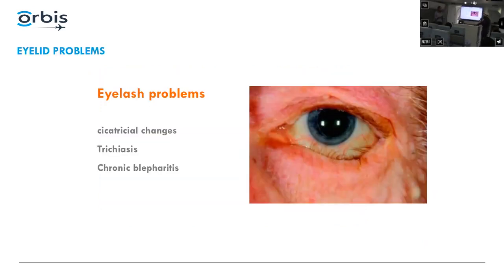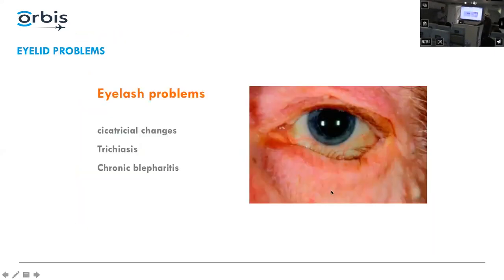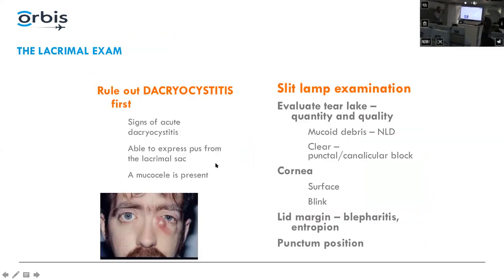Eyelash changes, entropion, trichiasis, and chronic blepharitis can all cause tearing. In trachoma, checking the fornix reveals symblepharon and scarring. Of course, always rule out dacrocystitis.